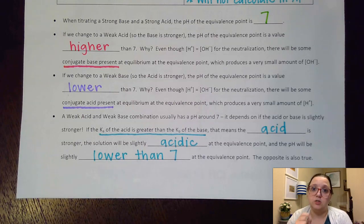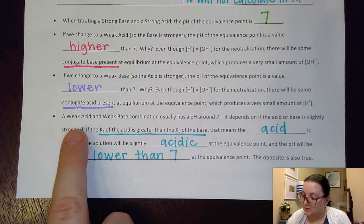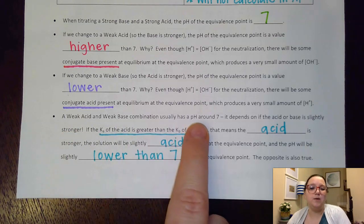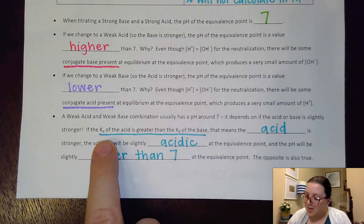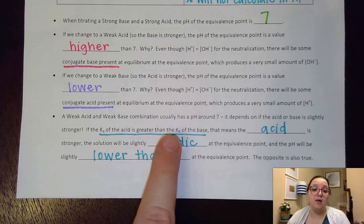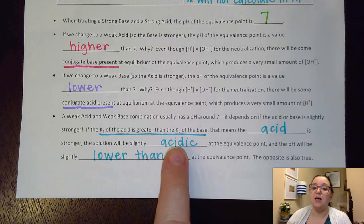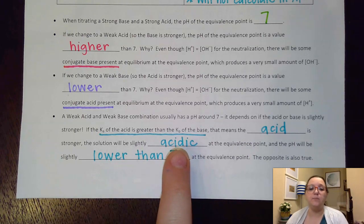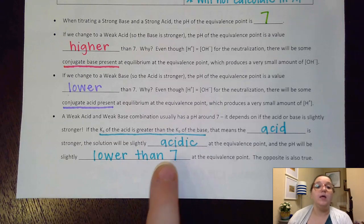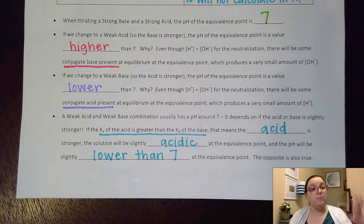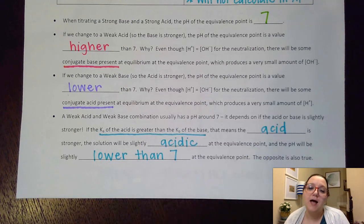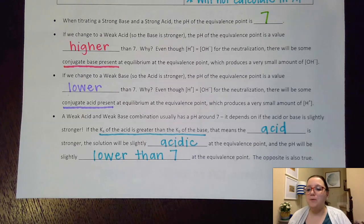You want to talk about the conjugate partner being present at equilibrium. A weak acid and a weak base usually has a pH around 7. If the Ka of the acid is greater than the Kb of the base, that means the acid is slightly stronger, so the solution would be slightly acidic at the equivalence point and the pH would be slightly lower than 7. If the Kb of the base was greater, then of course all of this would be opposite. With that said, let's go ahead and look at the next page.